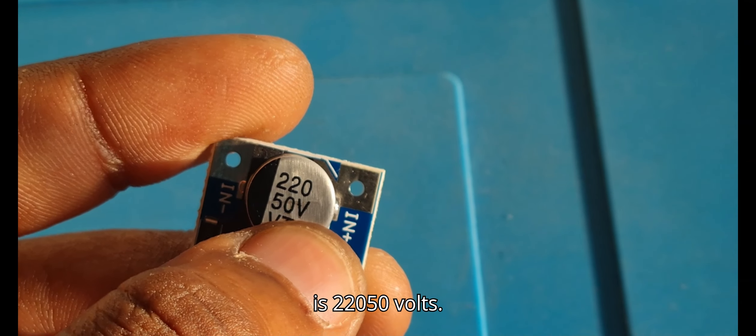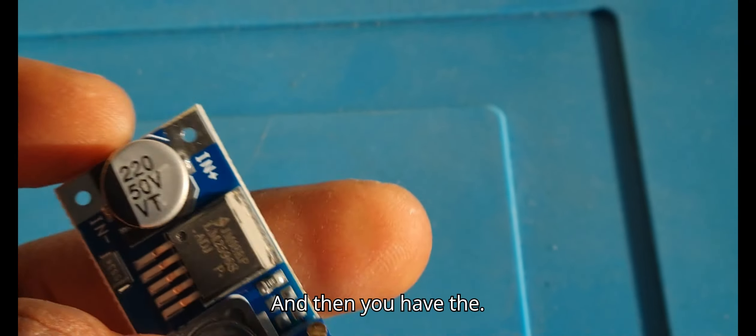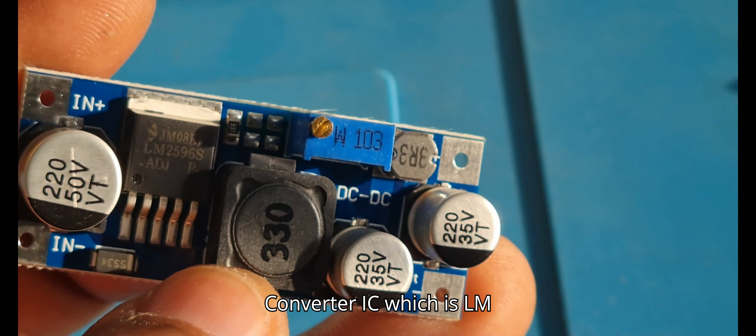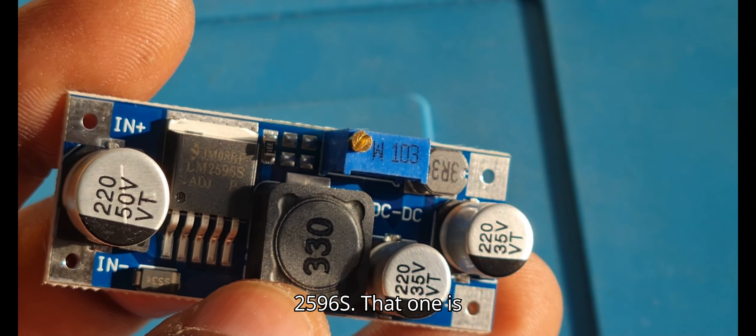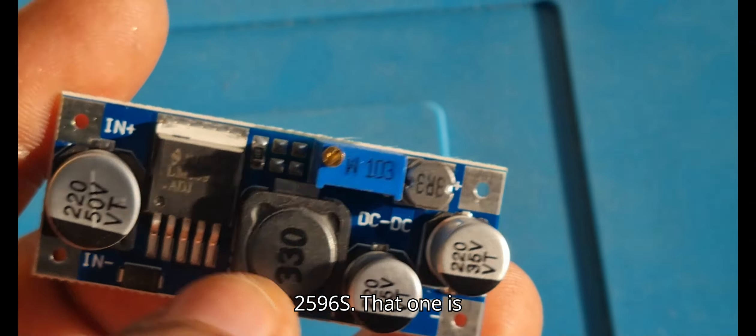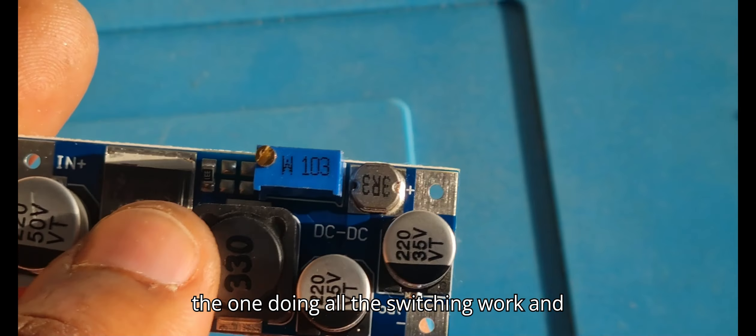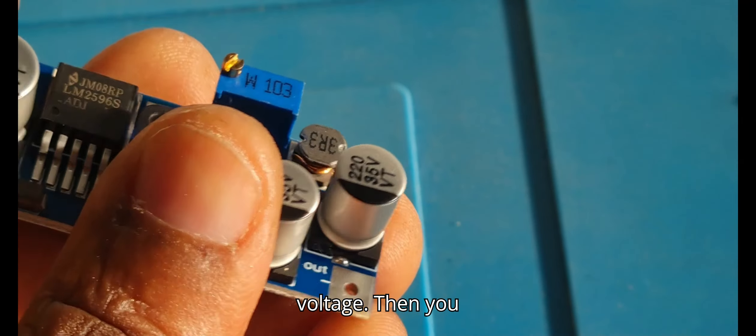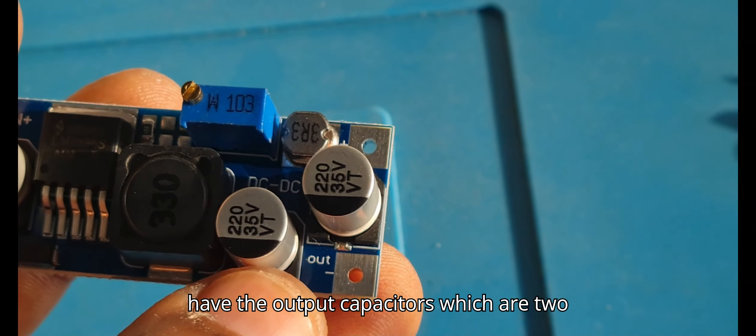which is 220 microfarads, 50 volts. And then you have the converter IC which is LM2596S, that one does all the switching work. Then you have the adjuster of the output voltage, and you have the output